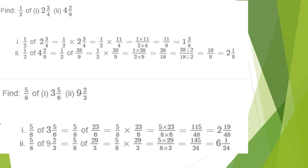The last question: 5/8 of 9 and 2/3. Converting 'of' to multiplication and 9 2/3 into improper fraction 29/3, we get 5/8 × 29/3. Multiplying numerators and denominators: 5 × 29 ÷ (8 × 3). There is no common factor, so we find the product: 145/24, which is an improper fraction. Converting to a mixed fraction gives the answer as 6 and 1/24.